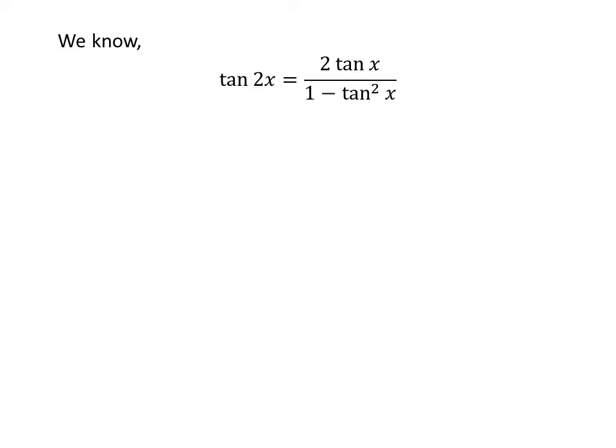We know the famous trigonometry identity: tangent of 2 times x is equal to 2 times tangent of x upon 1 minus square of tangent of x. The proof of this trigonometry identity has been explained in the video appearing in the upper right corner. The link of the video is also given in the description section.